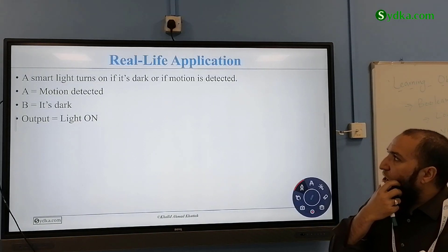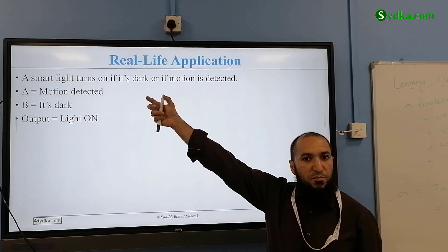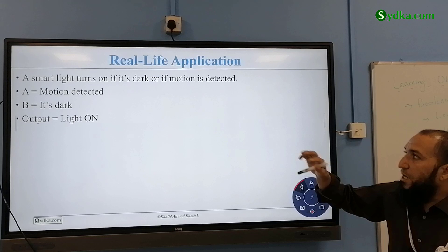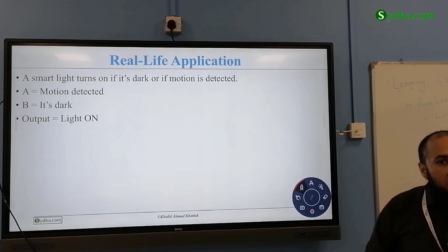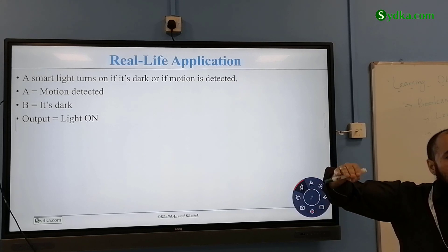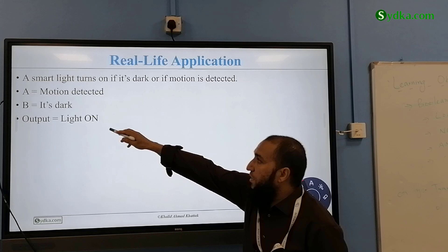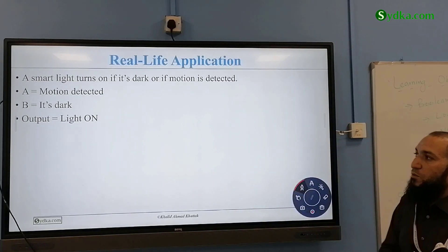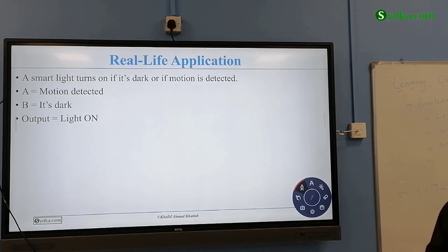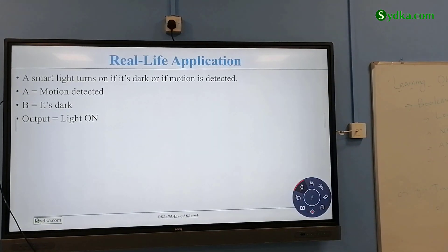Now, real, a smart light turns on if it's dark or if the motion takes, so we have detection, smart detection with sensor. If it turns on, if it detects somebody's moving in the room, or there's, the threshold of the light, of the brightness goes down to specific. So, A is equal to motion detected, B is equal to dark, light is on, okay? If one of them exist, exist, then we can put the light on.